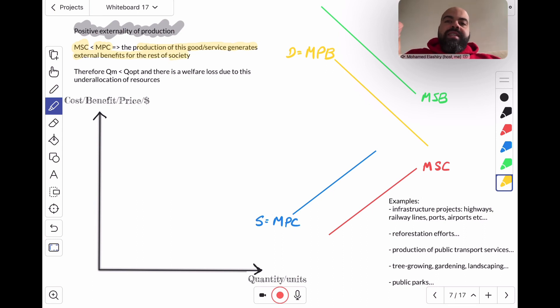Now, the result of this is that QM, the market produced quantity, will be less than QOpt, the socially optimum quantity or the quantity at which allocative efficiency is achieved. So this creates a welfare loss due to this under allocation of resources. So what does the diagram look like?